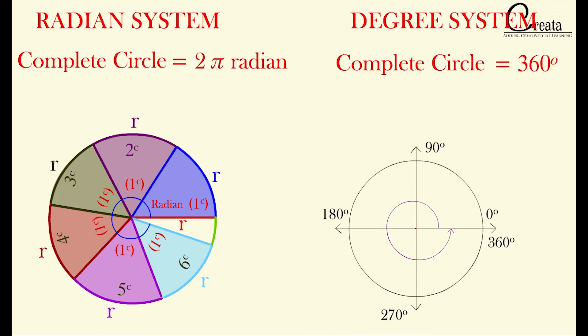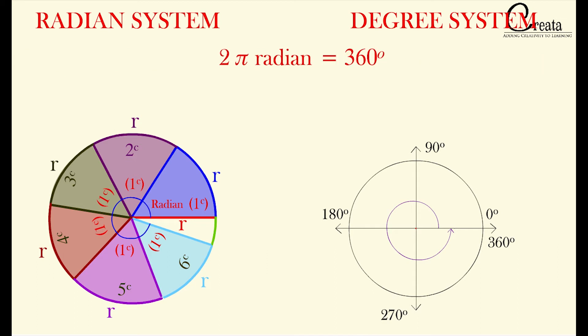So we can compare and say 2 pi radian is equal to 360 degree as both denotes a complete circle. So we can say on solving 1 radian is equal to 180 degree upon pi. This is a formula to convert radian to degree and vice versa.